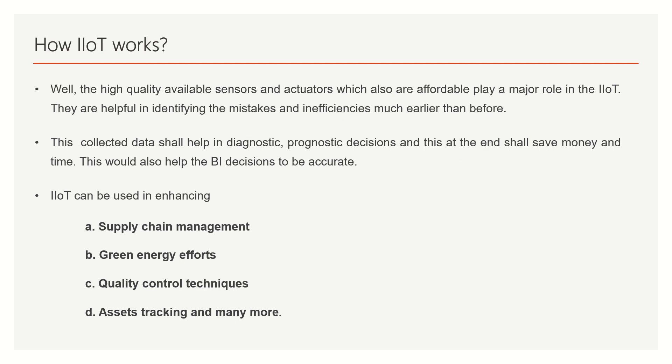It is very important to understand how IoT works. With high-quality, affordable sensors and actuators available these days, they play a major role in IoT — helping identify mistakes and inefficiencies much better than before. The collected data is helpful for prognostic and diagnostic analysis, and decisions can be made faster. Prognostic means: I collect a series of data and can predict that something will be a problem if it runs for the next two hours, so I take decisions much earlier. IoT can also enhance supply chain management, green energy efforts, quality control, asset tracking, and more.